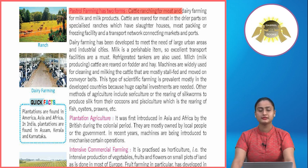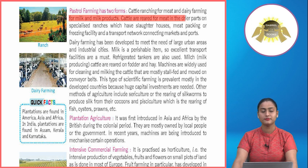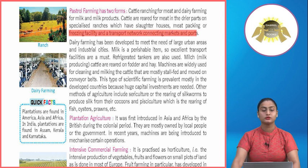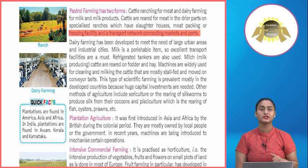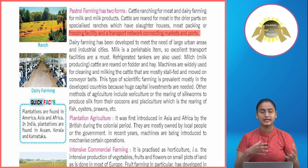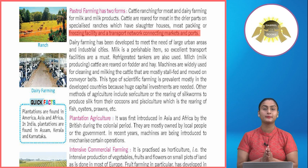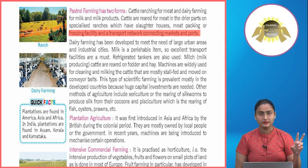Pastoral farming has two forms: cattle ranching for meat, and dairy farming for milk and milk products. Cattle are reared for meat in the drier parts on specialized ranches that have slaughter houses, meat packing or freezing facilities, and a transport network connecting markets and ports.